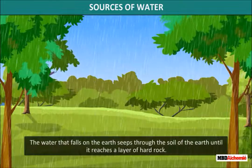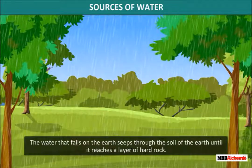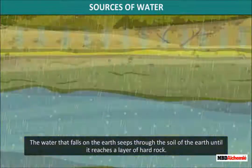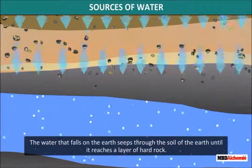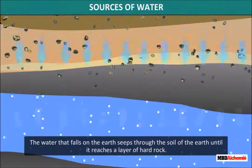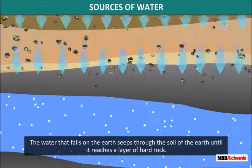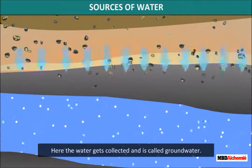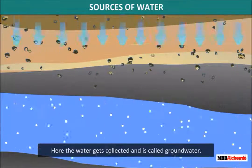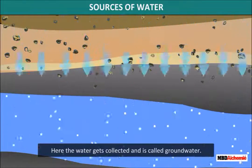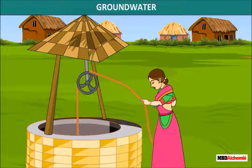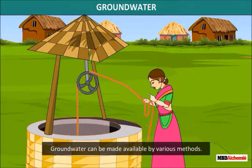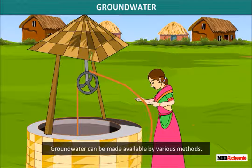The water that falls on earth seeps through the soil of the earth until it reaches a layer of hard rock. Here the water gets collected and is called groundwater. Groundwater can be made available by various methods.